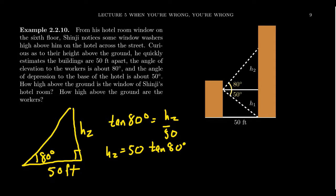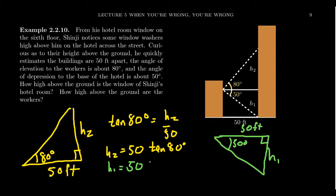But likewise, there's a second right triangle in play, this one that came from the angle of depression. And so if we look at that right triangle, Shinji's measurements gave the angle of depression as 50 degrees. He also has that the distance here is still 50 feet. And so then H1 here would be the opposite side associated to that. So by a similar calculation using the tangent ratio, we get that H1 is going to equal 50 times tangent of 50 degrees.